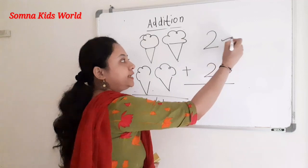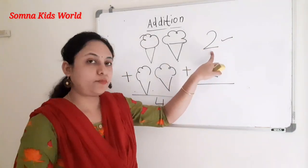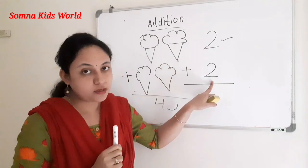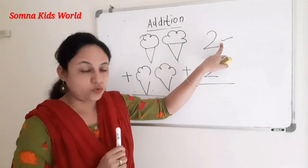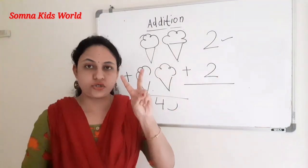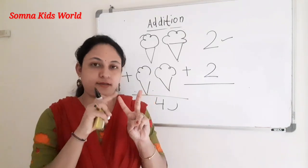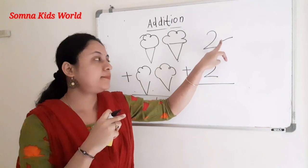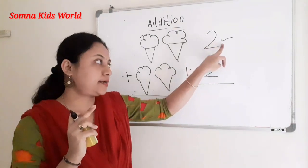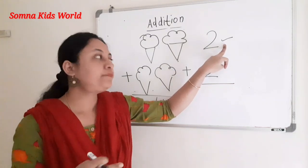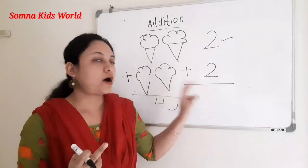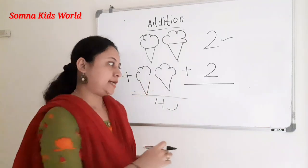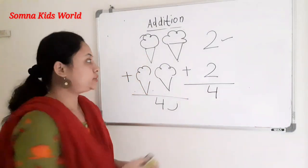Now, how does the mind method work? The first digit — the top number — you have to remember in your mind. The second number you have to count with your fingers. For example, if the first number is two and the second is also two, you keep two in your mind, then count: three, four. So the answer is four.